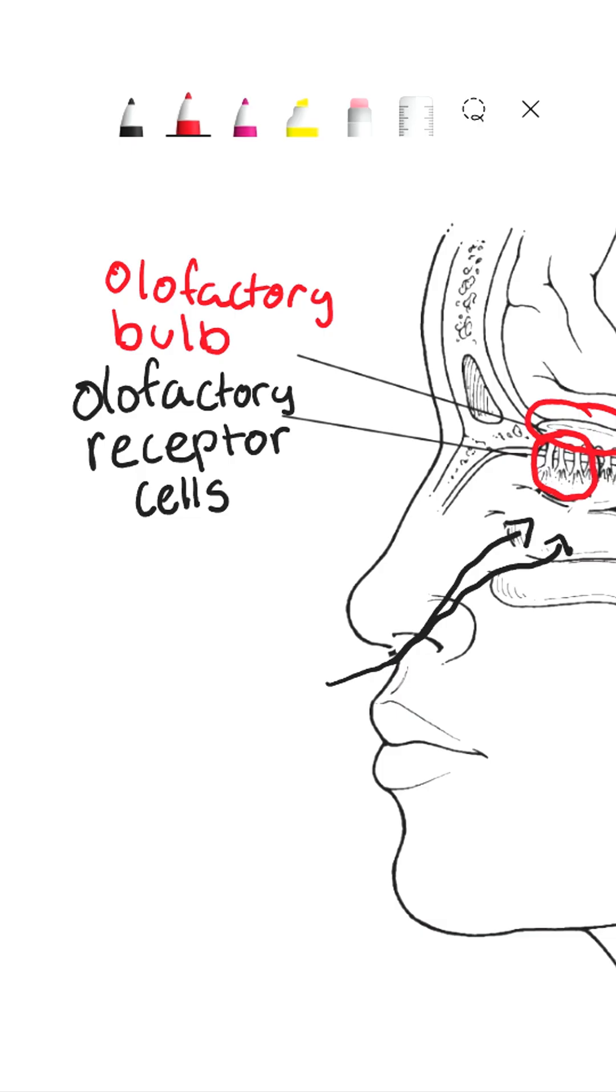This direct connection to the limbic system, rather than going through the thalamus like the other sense signals do, explains why the sense of smell has the power of creating such strong memories.